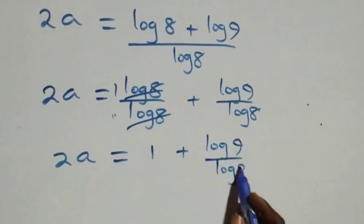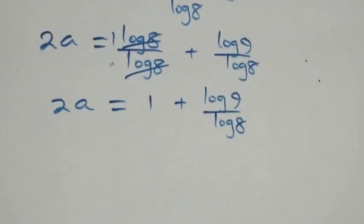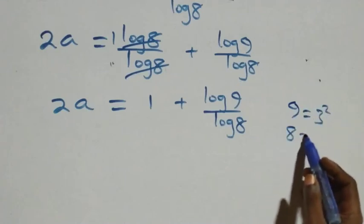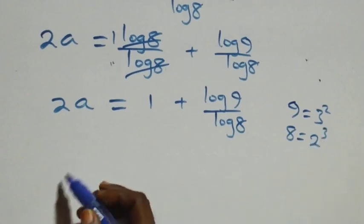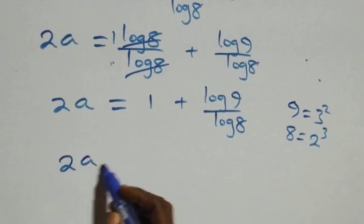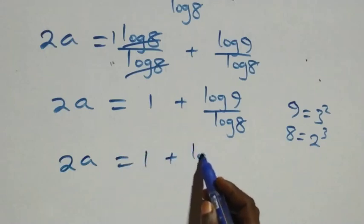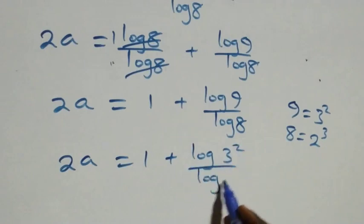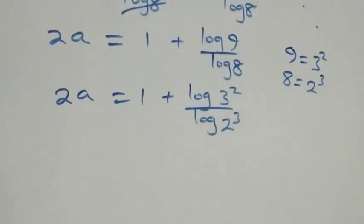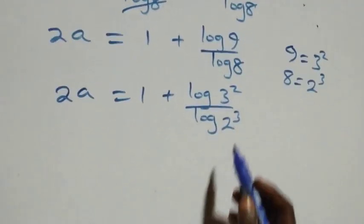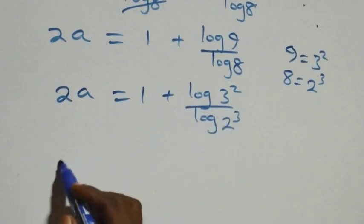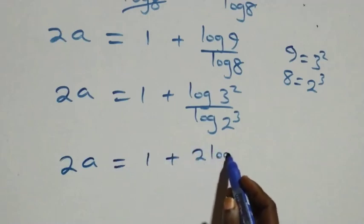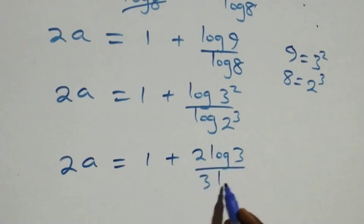We express 9 as 3 times 3, which is 3 squared, and also 8 as 2 times 2 times 2, which is 2 raised to power 3. So we have 2a equals 1 plus log(3 squared) over log(2 raised to power 3). Applying the power rule of log, the powers come down and we have 2a equals 1 plus 2 log 3 over 3 log 2.